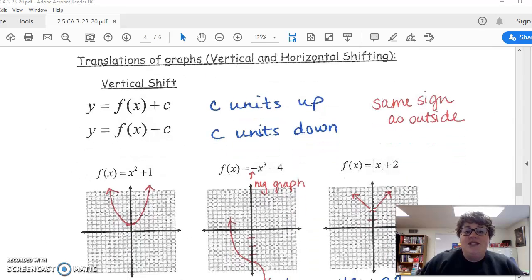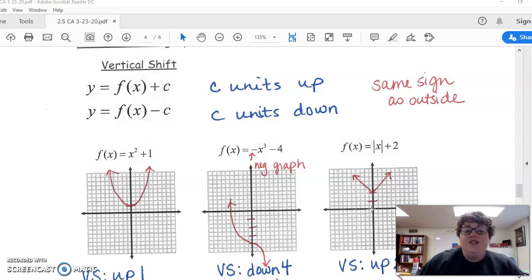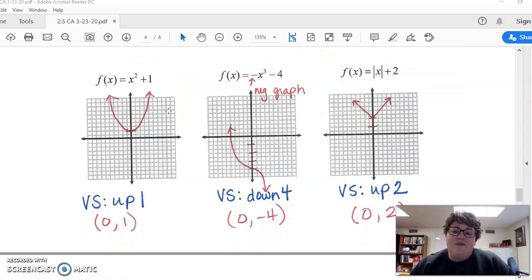The first thing is translations of graphs—we're going to vertically and horizontally shift graphs. Vertical shift is the outside of the graph, so this is the k portion of your formula. It goes with the sign, the same sign as the outside—either c units up or c units down. Here are a couple of examples.